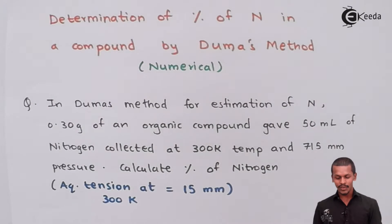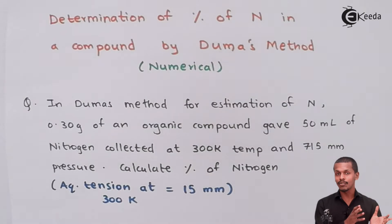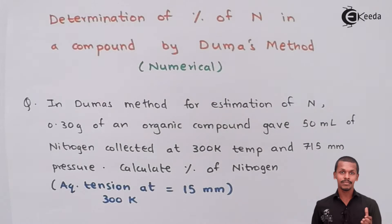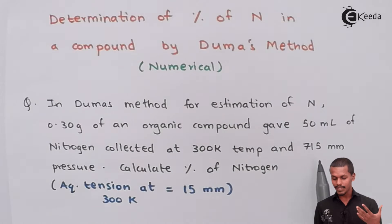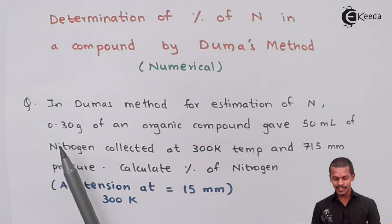We have to calculate the percentage of nitrogen. In Dumas method, the organic compound is combusted to produce carbon dioxide, hydrogen, and nitrogen gas. The nitrogen gas is collected in the nitrometer and has a volume of 50 ml. The temperature at which the nitrogen was collected was 300 Kelvin, and the external atmospheric pressure was 715 mm Hg. The compound mass given is 0.30 gram.